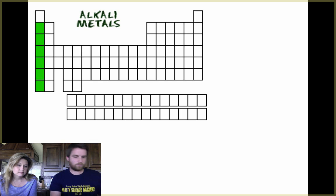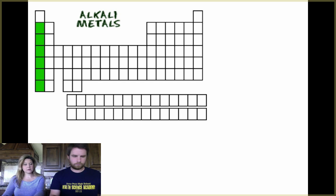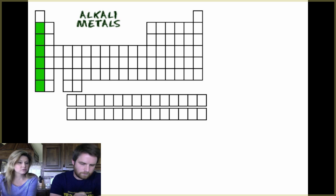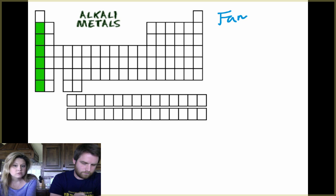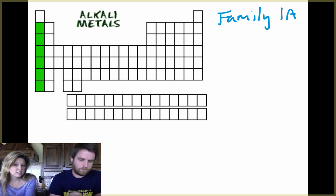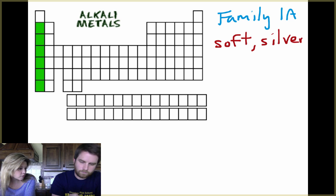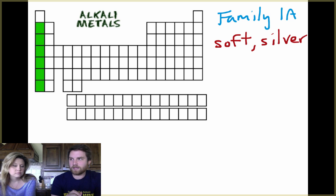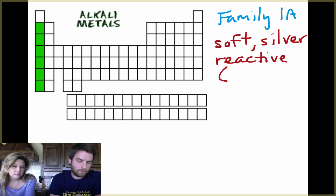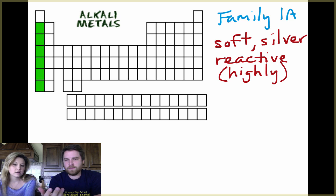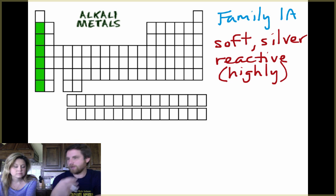All right. So starting with alkali metals, take some notes as we're going. Alkali metals is the first group, the first family. You notice that hydrogen is not shaded in. So they are relatively soft, they're silvery in color, and these are very, very reactive. So if you threw sodium into some water, what do you think would happen? It would actually react, not really violently, but it would bubble and actually cause a pretty decent reaction. So soft, silver, reactive. And they're not found in nature uncombined.